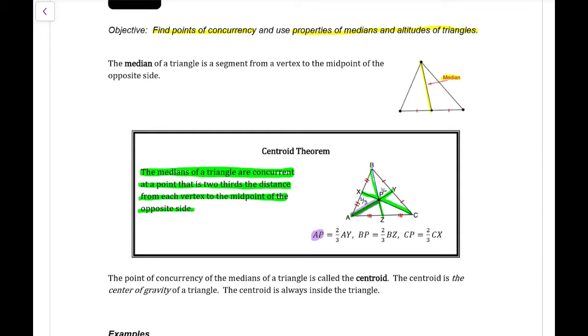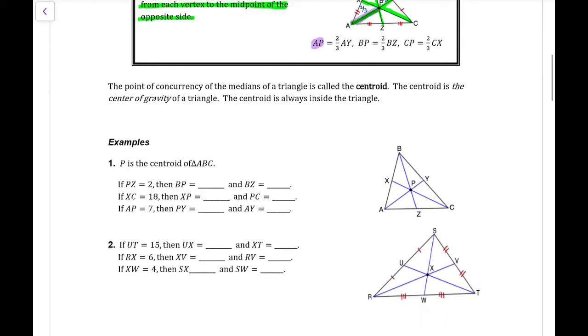I have AP is two-thirds of AY and PY would be one-third of AY. This happens with all of the sides of the triangles. This point of concurrency is called the centroid and the centroid is also the center of gravity of a triangle.